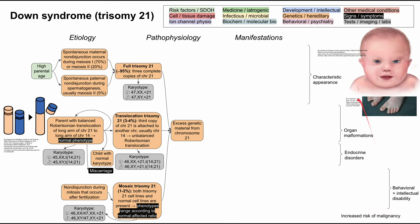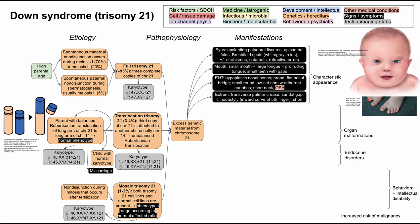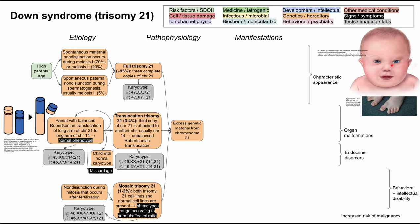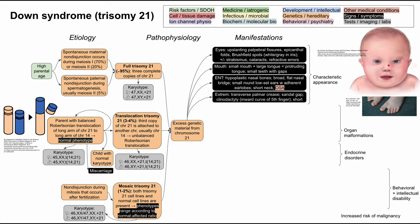Let's go through the characteristic appearance. In the eyes, patients with Down syndrome have up-slanting palpebral fissures, epicanthal folds, and Brushfield spots — grayish or whitish spots around the iris, visible when you zoom in on the eye. Less common eye problems include strabismus, cataracts, and refractive errors.